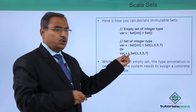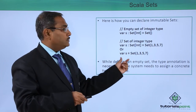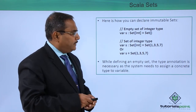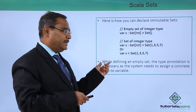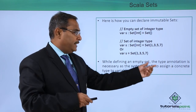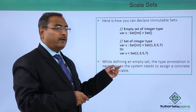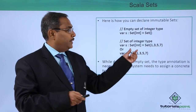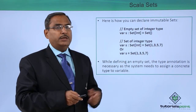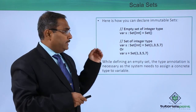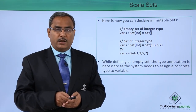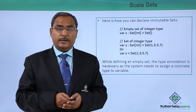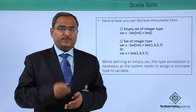Here you see, the type annotation colon Set[Int] is optional when providing values, because the system can infer the data type — in this case, integer — from the provided values. While defining an empty set, the type annotation is necessary as the system needs to assign a concrete type to the variable. In this discussion, we have defined what a set is, what immutable and mutable sets are, and how to declare them. Thanks for watching this video.